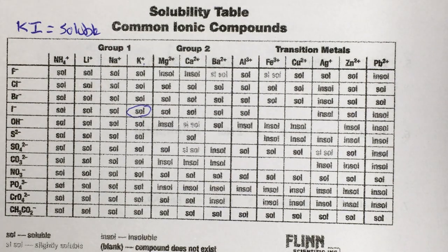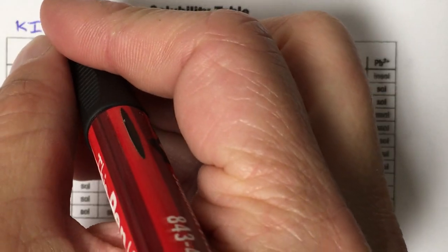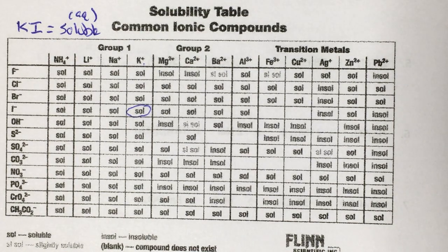What that means is if we were dealing with this in a chemical reaction, this substance would dissolve in the water that's around. And when we abbreviated state, we would abbreviate it as AQ for aqueous because it's soluble. It does dissolve.